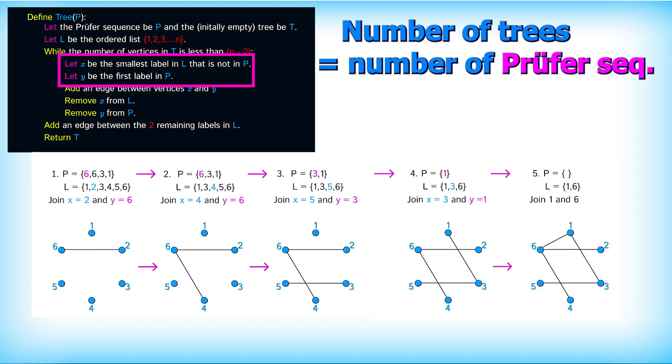Therefore every proof of sequence maps to a unique tree. Therefore the number of labeled trees and the number of proof of sequences must be equal, which is n to the power of n minus 2.